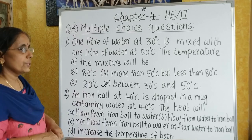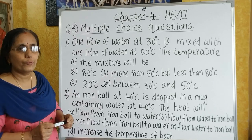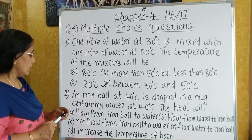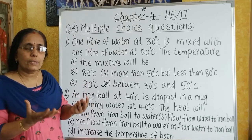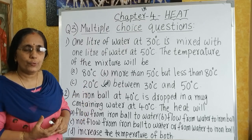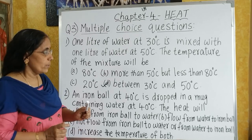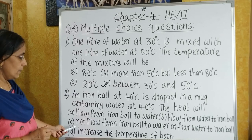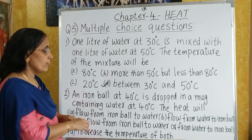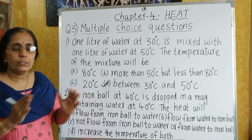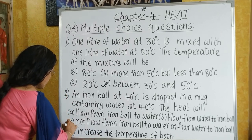The next question: an iron ball at 40 degree Celsius is dropped in a mug containing water at 40 degree Celsius — the heat flow? The same concept applies. Both the iron ball and water are at 40 degree Celsius, so will there be any heat flow? Obviously not, because both are at equal temperature. Heat will not flow from iron ball to water or from water to iron ball. The correct option is option C.